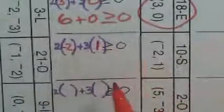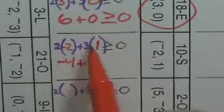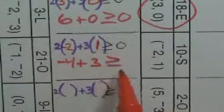The next one: x is negative 2 and y is 1. That gives me negative 4 plus 3, which is negative 1. Is negative 1 greater than or equal to 0? No. So we're not going to use box 10.